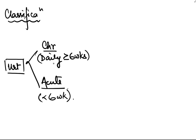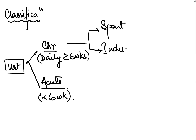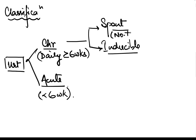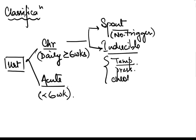Chronic urticaria is further divided into two types: spontaneous or inducible. It is spontaneous if there are no triggers found. If there are triggers like temperature, pressure, or cholinergic urticaria, then it is inducible.